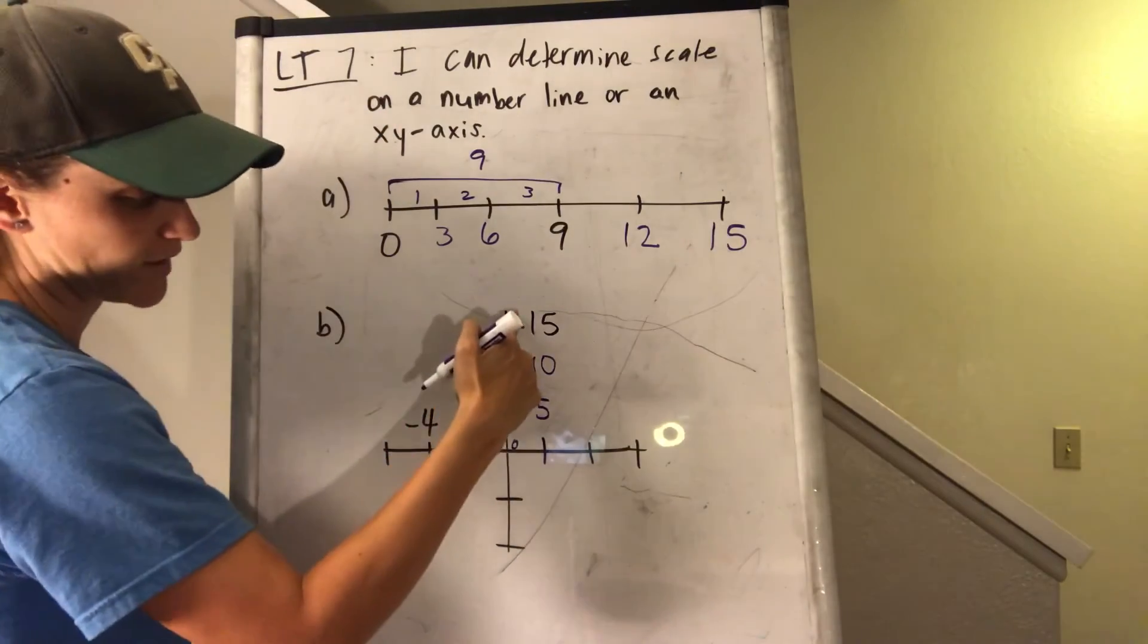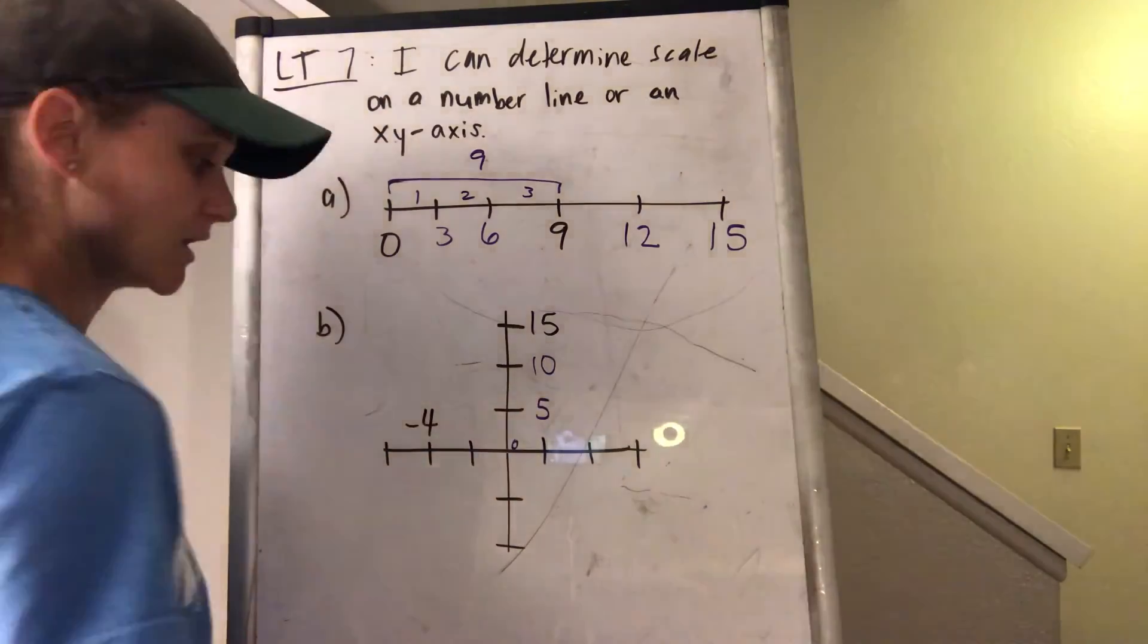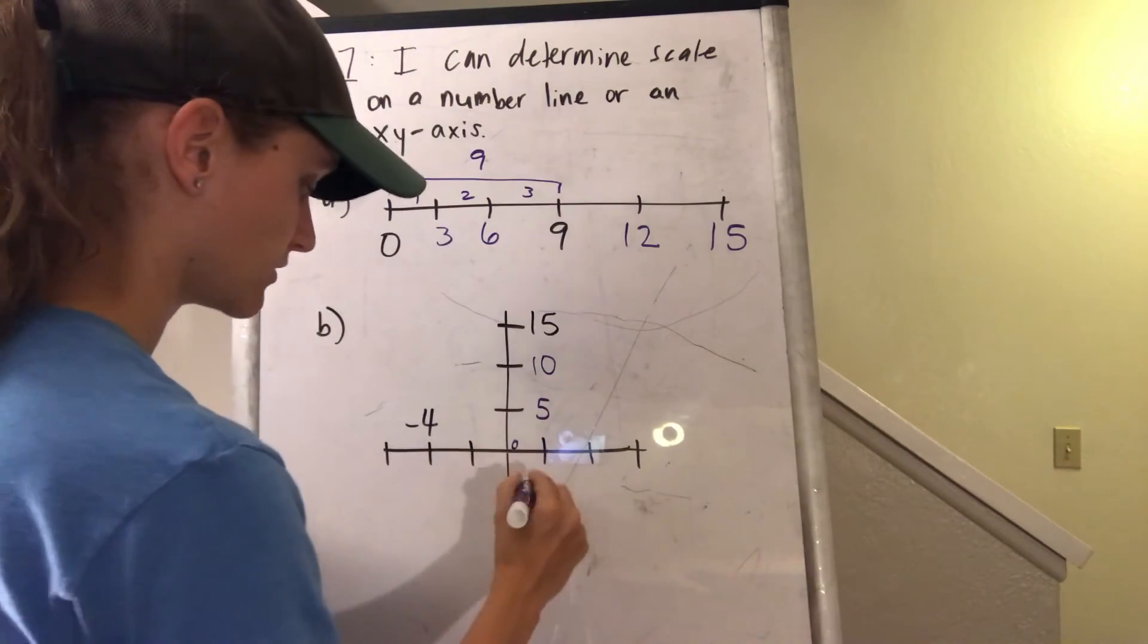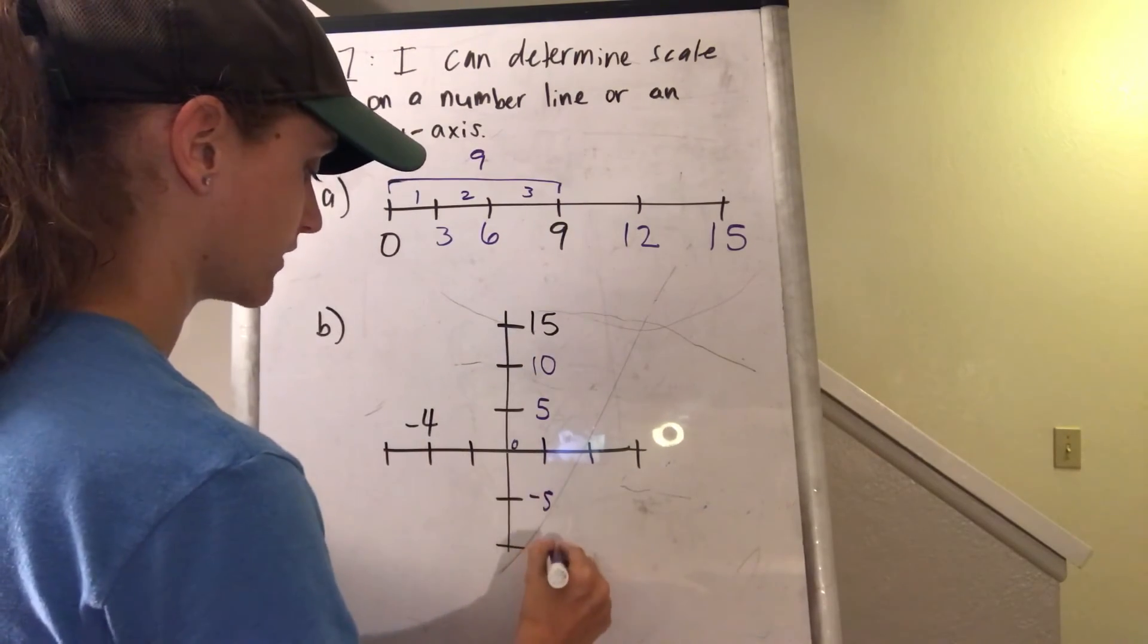And then remember with the graph, it just goes down into the negatives. So I'm still going by 5. So I have 0, negative 5, negative 10.